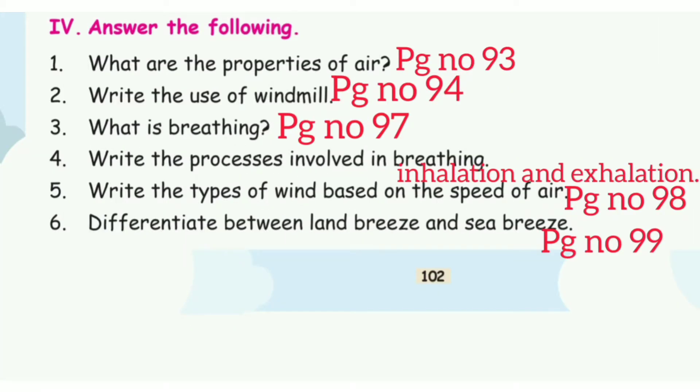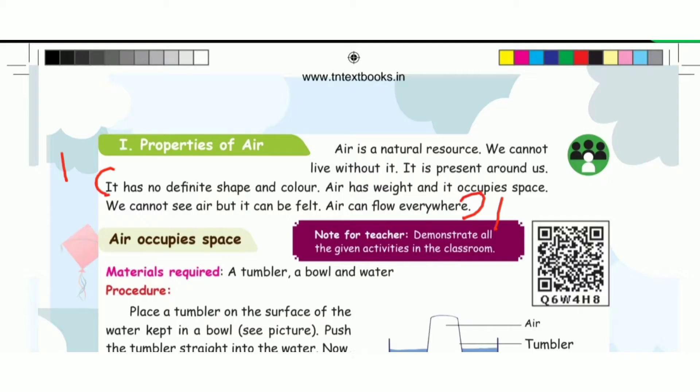Answer the following. First question: What are the properties of air? It has no definite shape and color. Air has weight and it occupies space. We cannot see air but it can be felt. Air can flow everywhere.